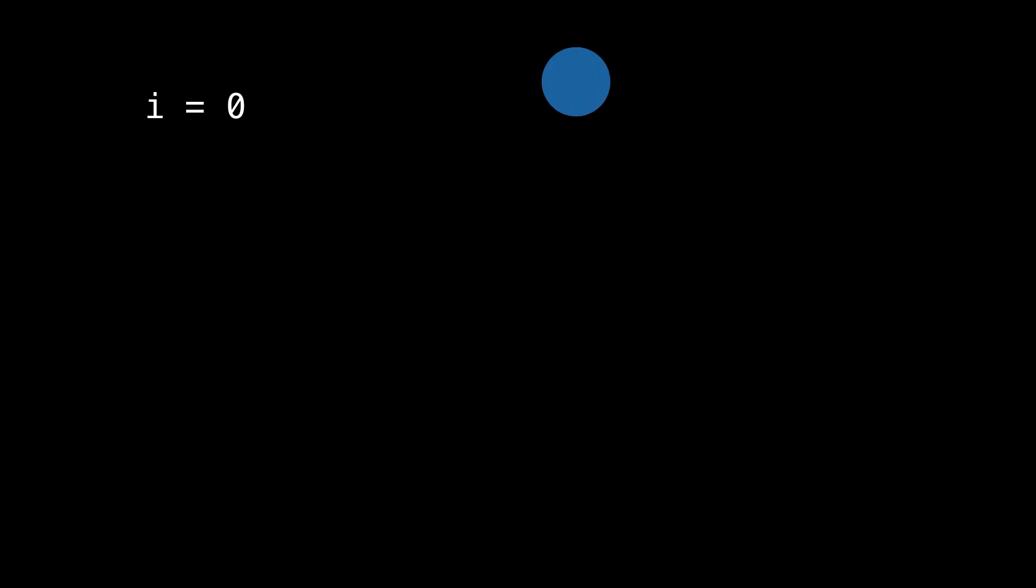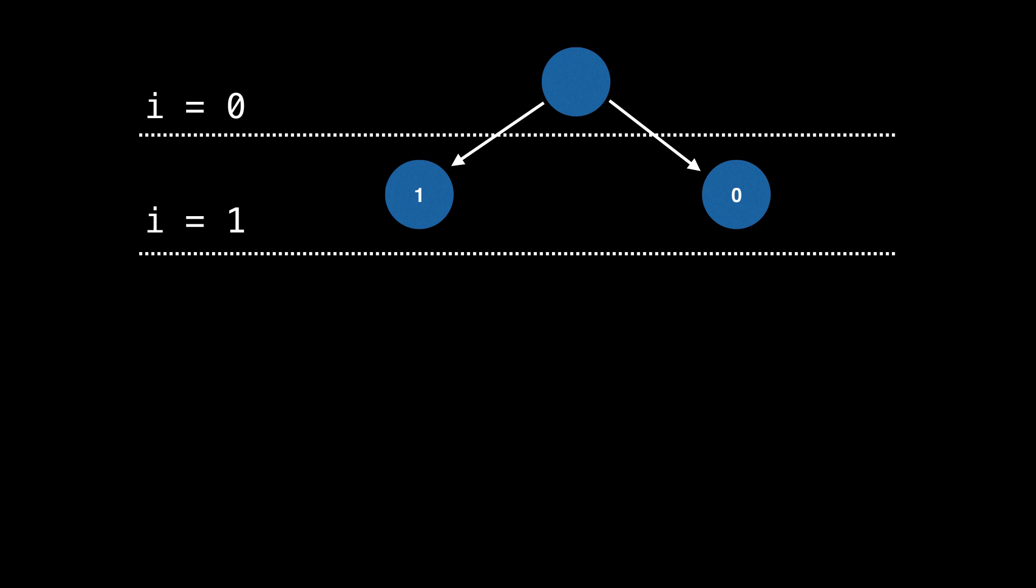Let's see what this looks like visually. First, we start with the empty state, and i equal to zero, then we do our two recursive calls. You can think of this as producing two new states where one state has a bit set to one and the other a bit set to zero.